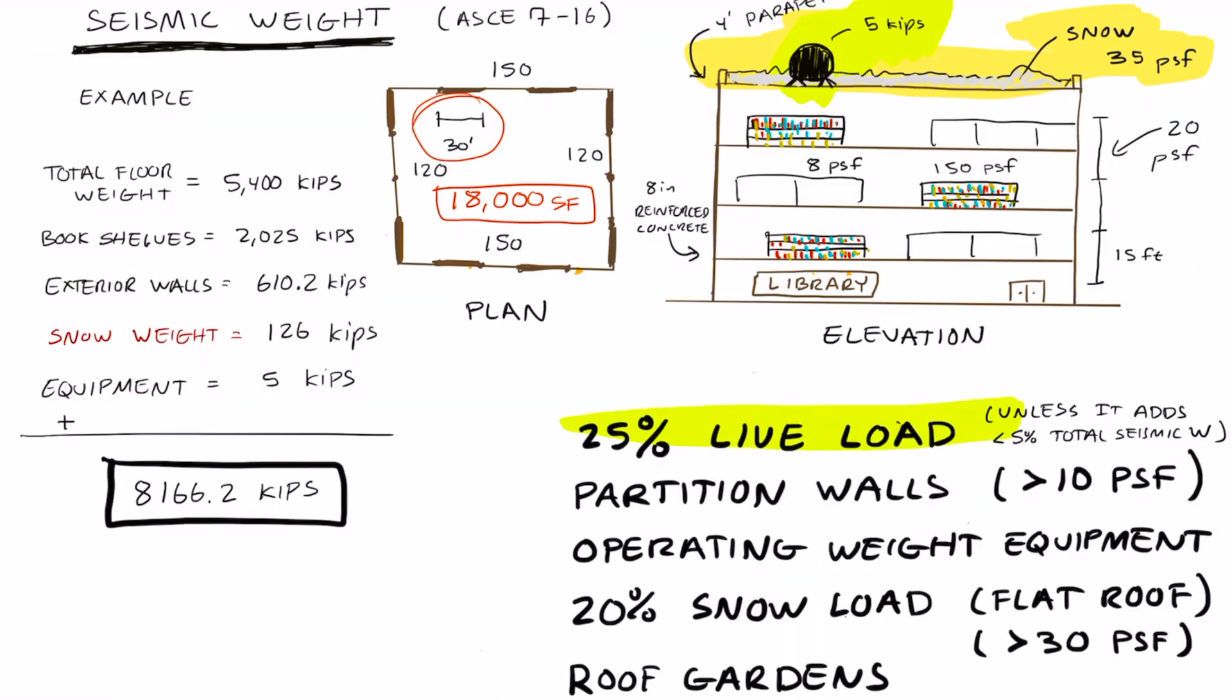Let's review some of the specifics. We find 25% of the live load unless it adds less than 5% of the total seismic weight. We look at partition walls if it's greater than 10 PSF. We look at the operating weight of equipment. We find 20% of the snow load for flat roofs, greater than 30 PSF. And we include the weight of roof gardens and equipment. And there you have it. That's an example for how you find the seismic weight of a building using ASCE 7-16.